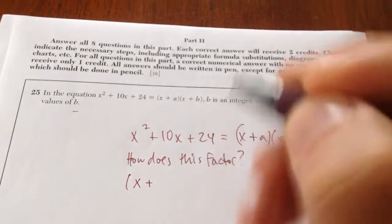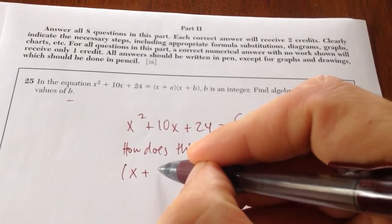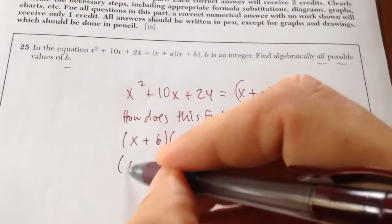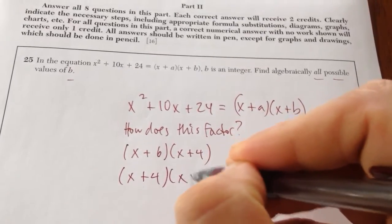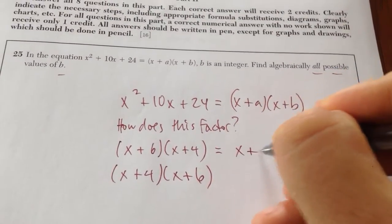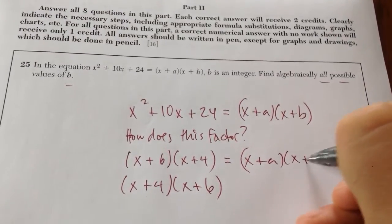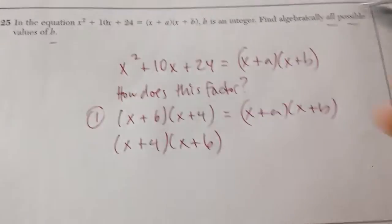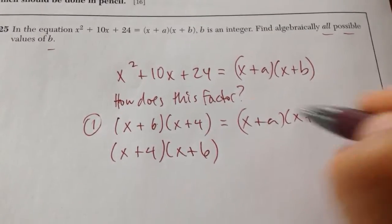I know the two factors of this are x plus 6 and x plus 4. They could also be x plus 4 and x plus 6. So basically, over here, they're asking you, what are the values of b? Well, it looks like in this first equation, a was 6 and b is 4.